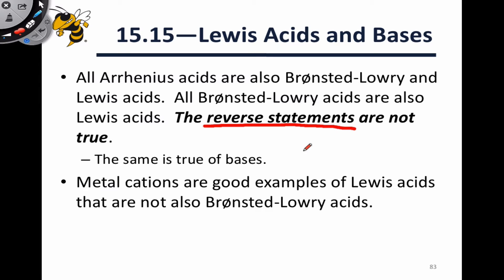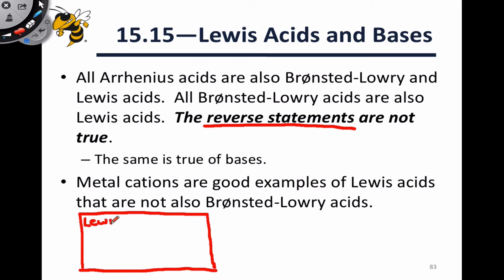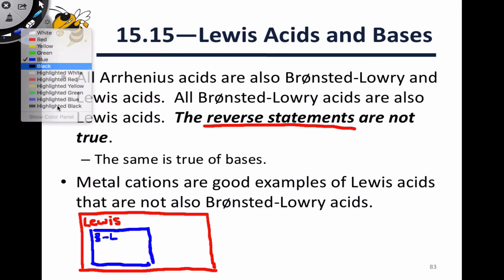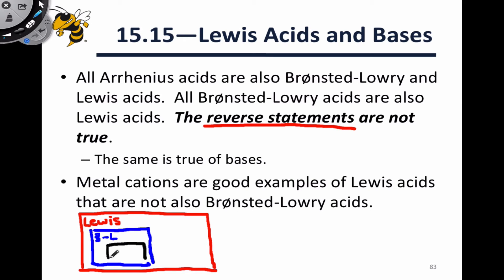Not all Lewis acids are necessarily Bronsted-Lowry acids. There's a hierarchy worth keeping in mind: if we think about all the Lewis acids in the universe and put them in a box, inside that box a subset are the Bronsted-Lowry acids, and inside that Bronsted-Lowry box an even smaller subset are the Arrhenius acids. All Arrhenius acids are Bronsted-Lowry acids, but not all Bronsted-Lowry acids are Arrhenius acids. And all Bronsted-Lowry acids are Lewis acids, but not all Lewis acids are Bronsted-Lowry acids. A great example is BH3 — it accepts an electron pair at the boron atom, not at any hydrogen, and because it doesn't donate H+ it is a Lewis acid but not a Bronsted-Lowry acid in the vast majority of contexts.